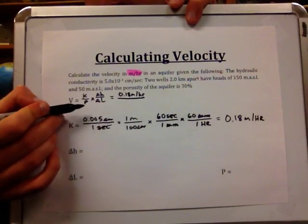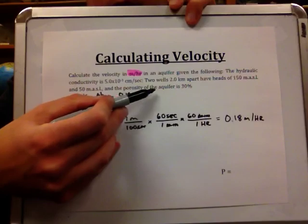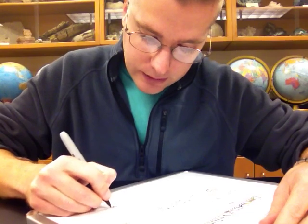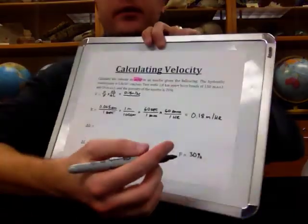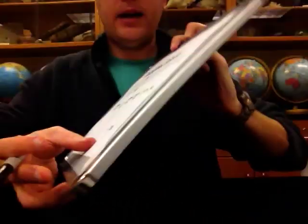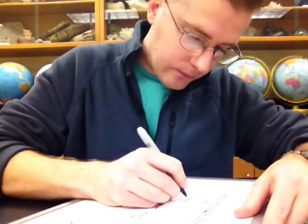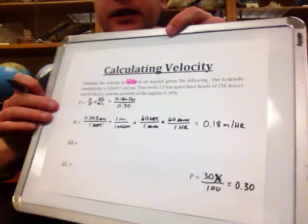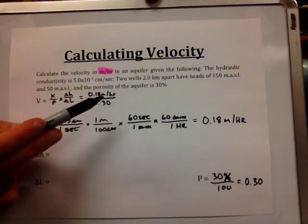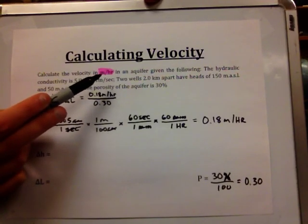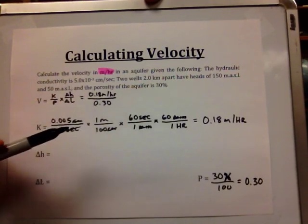For porosity P, we're told it is 30%. We want this to be unitless, so we drop the percent sign and divide by 100, giving P equals 0.30. We know K is already in meters per hour — the same units as our desired answer — so we need everything else to be unitless or to cancel.